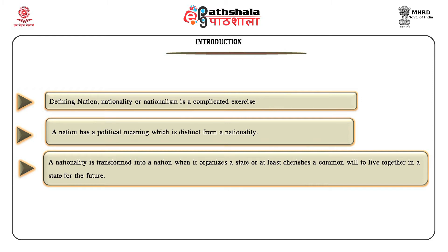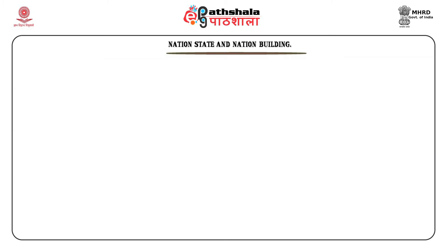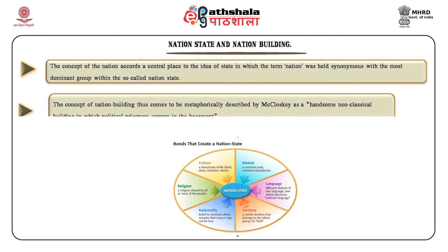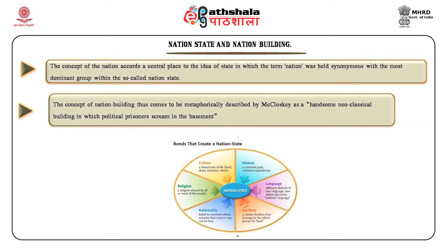Brass states that when an ethnic group demands a major say in the political system, or control over a piece of territory within the country, or demands a country of their own with full sovereignty — aspiring to national status and recognition — and achieves any one of these goals, it becomes a nationality or a nation. From this viewpoint, a nation may be seen as a particular type of ethnic community, or rather as an ethnic community politicized with recognized group rights in the political system. It follows that nations may be created by the transformation of an ethnic group in a multi-ethnic state into a self-conscious political entity, or by the amalgamation of diverse groups and the formation of an inter-ethnic composite or homogeneous national culture through the agency of the modern state.